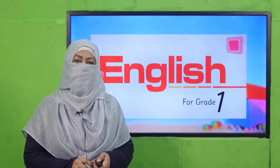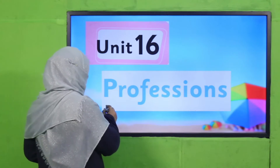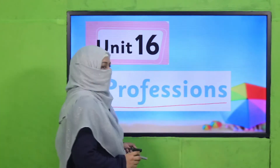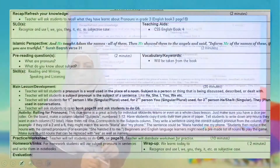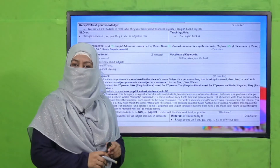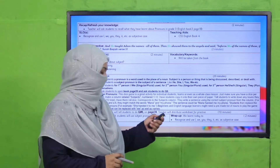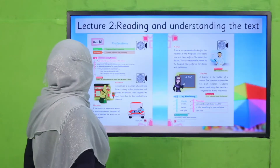Bismillahirrahmanirrahim. Assalamu alaikum, my dear students. How are you? I hope you are enjoying the best of health. I welcome you to my class — English for Grade One. We are learning Unit 16, and its title is 'Professions'. My dear fellow teachers, this lesson plan, PowerPoint presentation, and worksheet links are given. You may click, download, and follow it as is or modify it for your convenience.